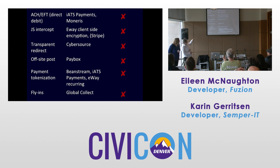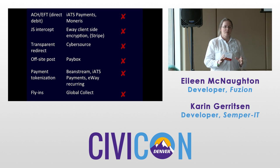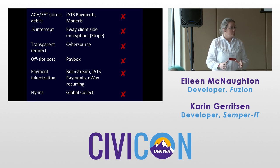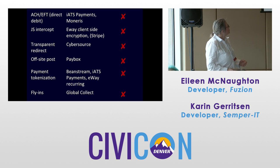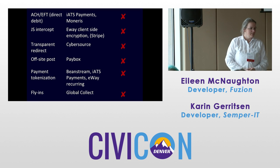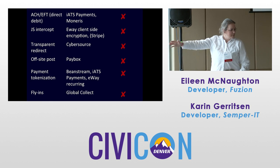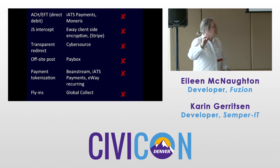Tokenization means the credit card information remains with the payment processor and you have in your database a six-to-eight character alphanumeric combination that represents that person's credit card on your merchant account. Examples: Beanstream, IATS Payments, E-Way — all use tokenization for recurring. When it's time of the month, you send the token with the amount, it gets processed, and it comes back yay or nay. All sensitive information is stored with Beanstream, TD, or IATS Payments. It's the modern way of payment processing.